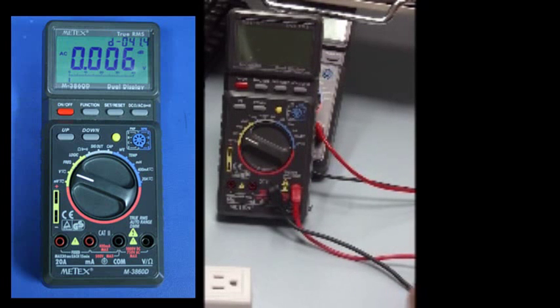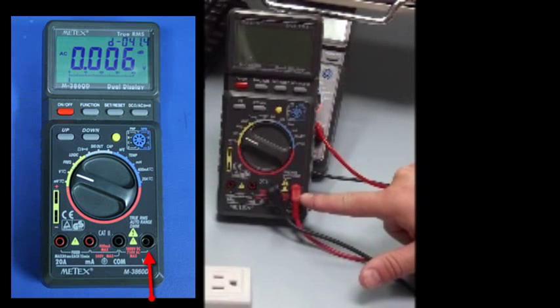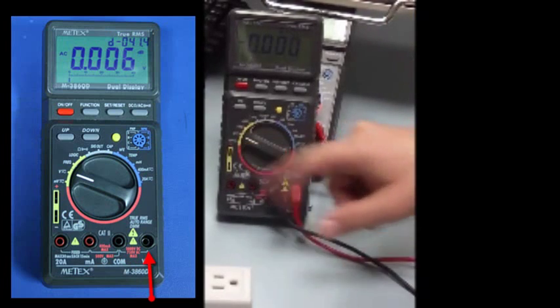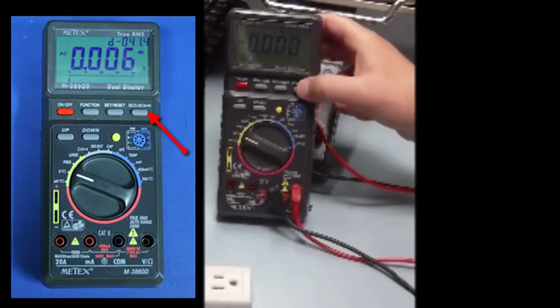On our meter, as we set up, we've got it set to voltage with our common and voltage lead setting. We turn our multimeter back on, we're set to voltage. To measure AC, we need to select AC.